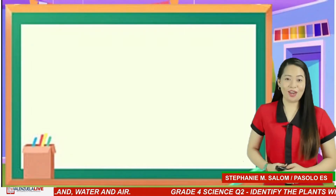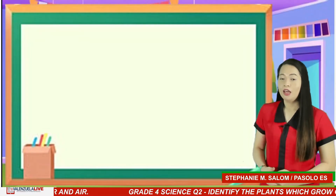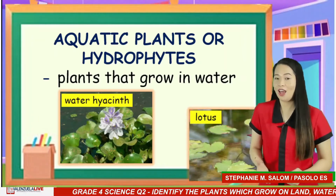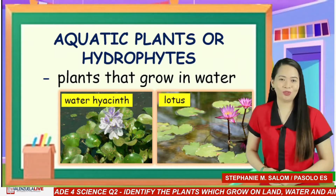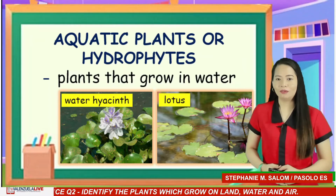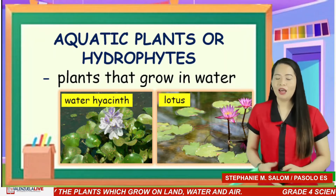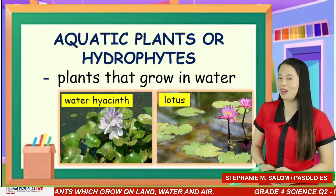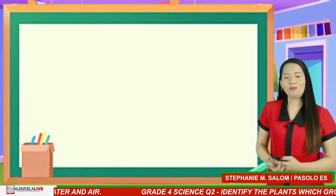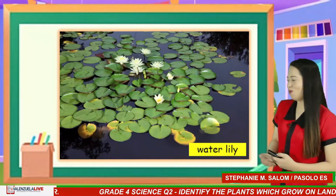Not all plants can live on land. Others grow on water. They are called aquatic plants or hydrophytes, like the water hyacinth and the lotus. They grow and propagate in water. They have a soft, hollow stem and smooth leaves that allow them to keep afloat in bodies of water. The most common aquatic plant in Valenzuela is the water lily.